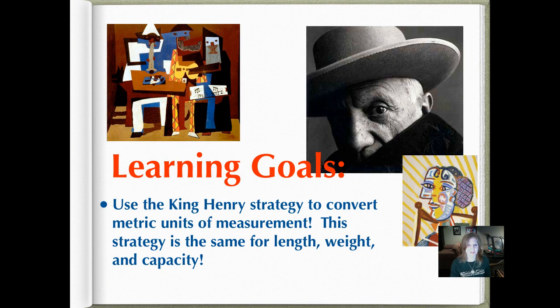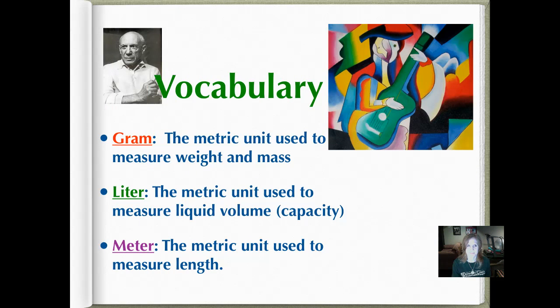Our individual lesson learning goals, just like our general one, because what we're doing is we're taking all of the individual lesson learning goals from all three of those last lessons, and we are practicing all of them. So we're going to use that King Henry strategy. First of all, our vocabulary.